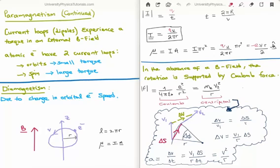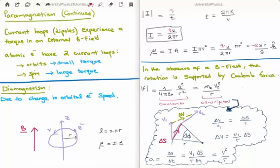Now let's discuss diamagnetism. Essentially diamagnetism is due to the change in an orbiting electron's speed when we apply an external field. We have a magnetic field applied perpendicular to the current loop, with the electron orbiting the nucleus at a certain speed and radius — this is really the Bohr magneton. The circumference is 2πr, and the vector dipole moment is the current times the vector area. The magnitude of the current is simply the charge divided by the time for one revolution, where one revolution is 2πr divided by speed. Combining these gives an expression for the current of an orbiting electron: Q times its orbital speed divided by the circumference 2πr.